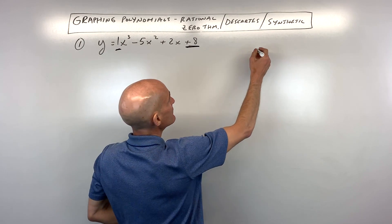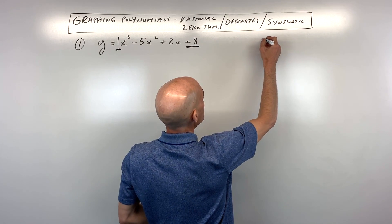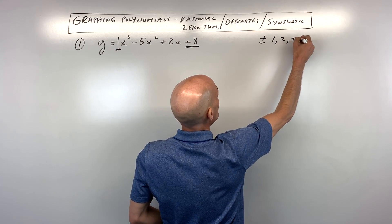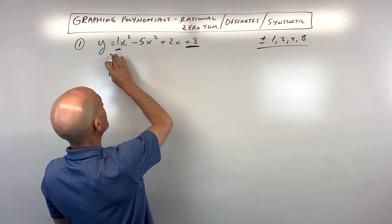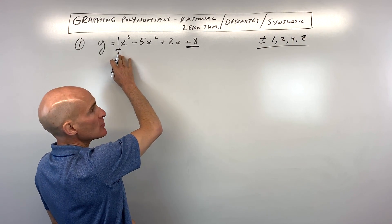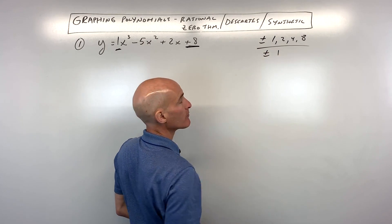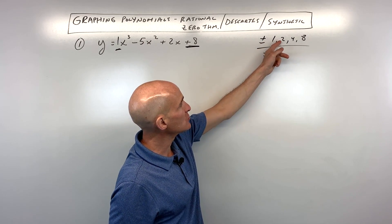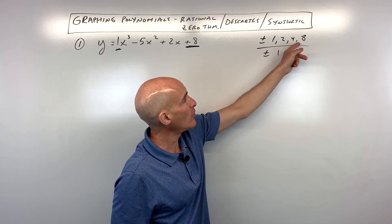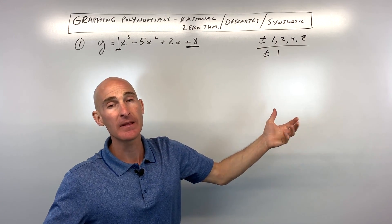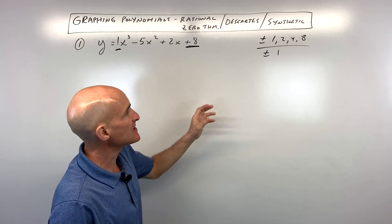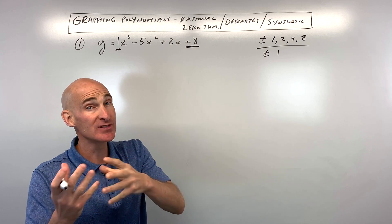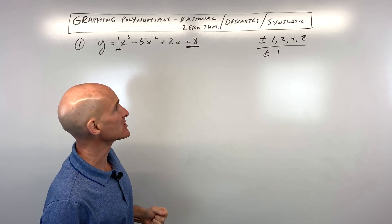So all the factors of 8 are going to be plus or minus 1, 2, 4, and 8, divided by all the factors of the leading coefficient, which in this case are plus or minus 1. So it could be 1 over 1, 2 over 1, 4 over 1, 8 over 1, positive or negative. And so what this does is it kind of narrows down the possible zeros — those x-intercepts — for us.